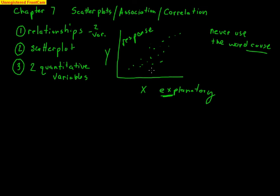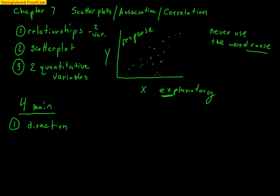When we take a look at a scatter plot, there are four main things we want to examine. The first is direction. X is always increasing, so we want to look at: does y increase with it — that's a positive relationship — or does y decrease as x increases, which would be a negative relationship? Look at the dots and see if they're generally going up or going down from left to right. State direction as positive or negative — use the words, not a plus or minus sign.